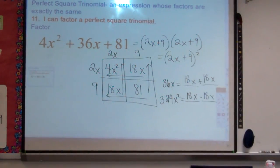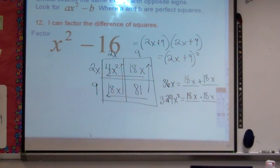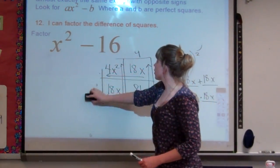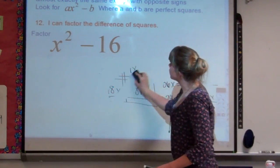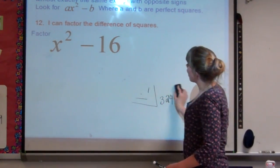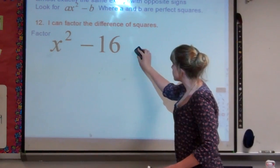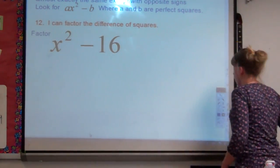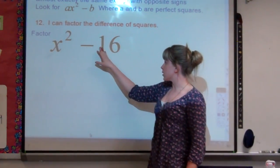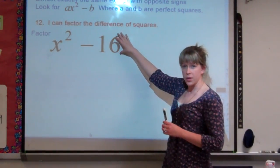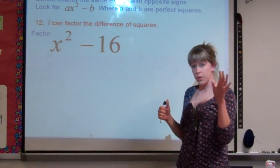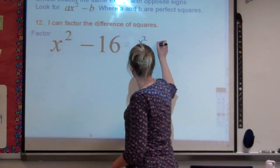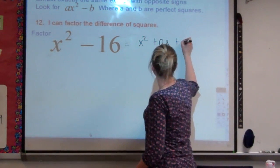Moving on to the next example — pause the video if you need to write it down. In this case, we are talking about the difference of squares. Difference of squares is an expression whose factors are almost exactly the same with opposite signs. You want to look for ax squared minus b, where a and b are perfect squares. Here we've got x squared minus 16. This doesn't have three terms, but we can write it as x squared plus 0x plus negative 16.